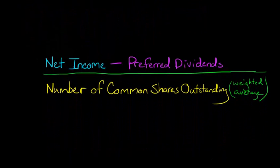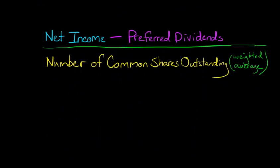So we've got net income, and then we subtract out preferred dividends, because what we want to get here is an idea of the amount of net income available to the common shareholders. So net income, we subtract out any preferred dividends that are paid, and then we scale everything by the number of common shares outstanding.